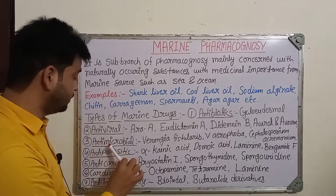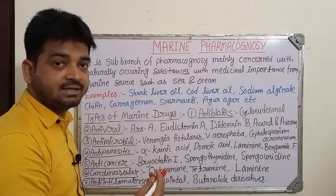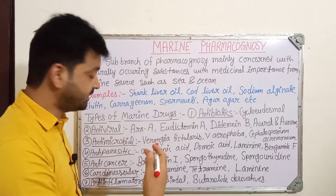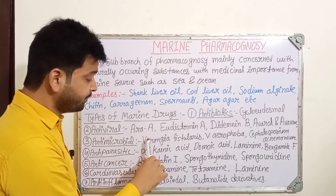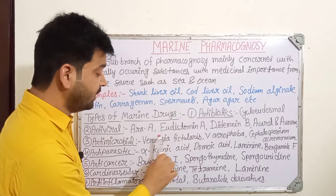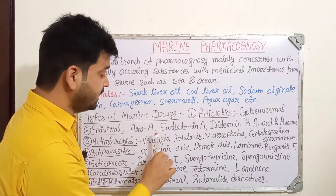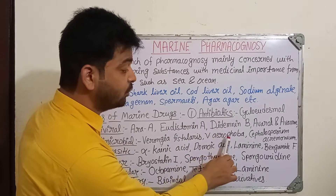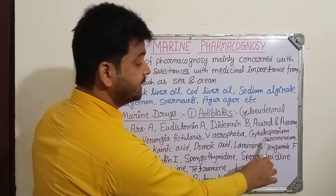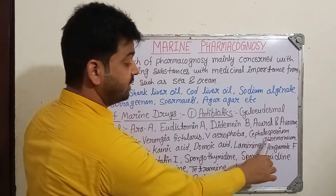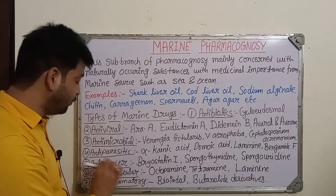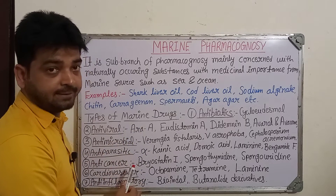The third type is antimicrobials - these are agents which inhibit or kill the growth of microorganisms. Because of microbes we get infected, and in those cases antimicrobials can be used. Examples are Ircinia fistularis, also written as V. fistularis, Ircinia aerophoba, and Cephalosporium acremonium - a fungus also obtained from marine sources which has antimicrobial activity.